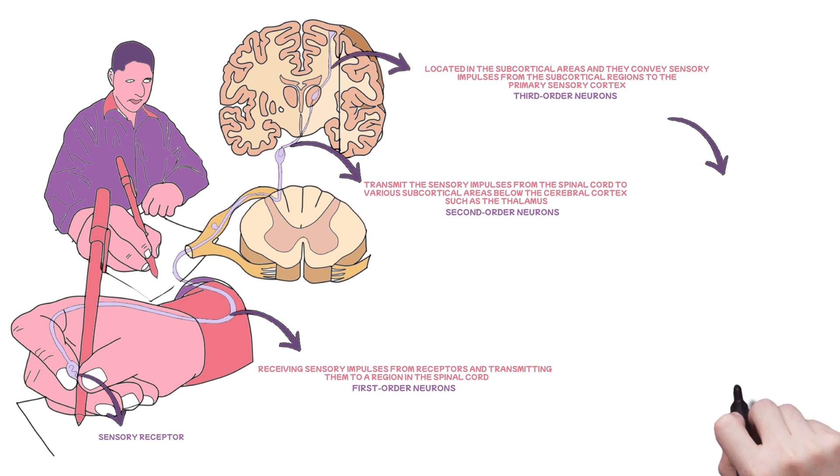These groups of neurons combine to form tracts, and this brings us to our core topic today: the ascending tracts of the spinal cord, also known as the somatosensory pathways.